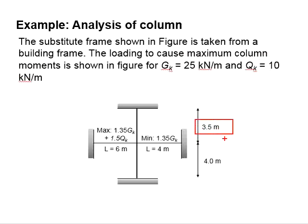The height of the column above the beam is 3.5 meters and the height of the lower column is 4 meters. The length of the beam on this side is 6 meters while the length of the beam on the other side is 4 meters.